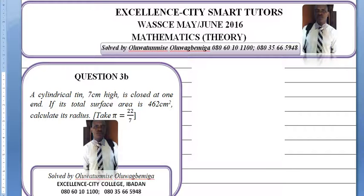Question 3b. A cylindrical tin 7 cm high is closed at one end. If its total surface area is 462 cm square, calculate its radius, take pi to be 22 over 7.